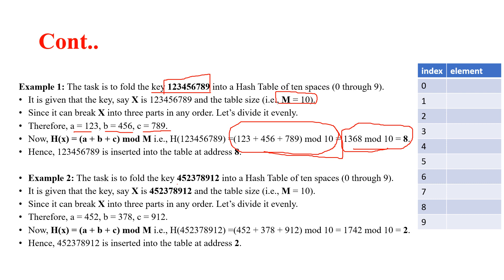Similar to that, I have taken another example. And I will divide this key into 3 parts. And if I do sum of all these 3 parts, I will get the large value and that is 1742. That's not my table range. My table size range is only 0 to 9, so we don't have any index 1742. So what will we do? We have to mod with table size, so we will get one index where you can store the element 452378912.